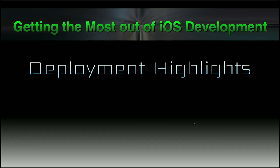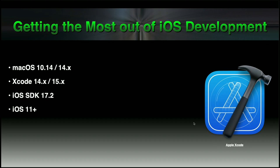So let's start with some changes on the deployment side of things, most of them brought by Apple itself every time they decide to change things. For example, now you can use macOS X 14, or even the newest Sonoma, and Xcode 14 or 15. One of the big changes introduced in the last Sojo release is that we updated the iOS SDK to the latest one, 17.0.2.